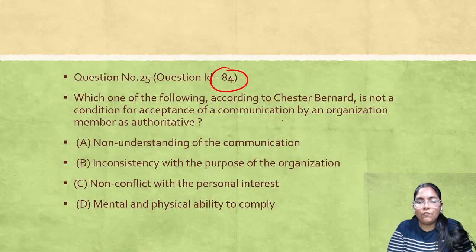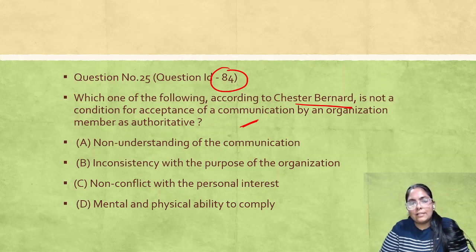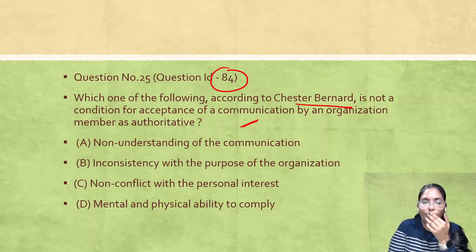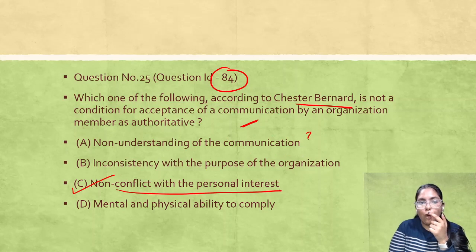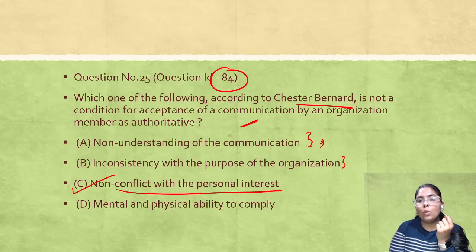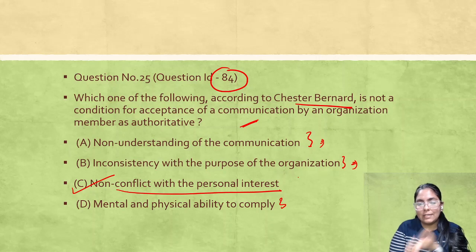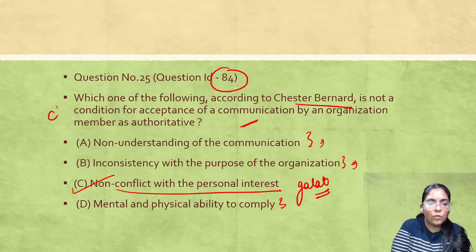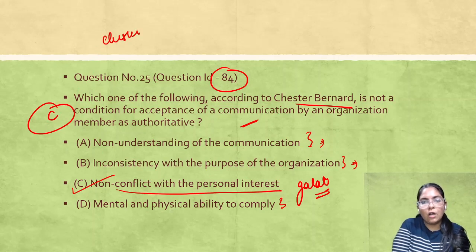Question ID 84: Which of the following, according to Chester Barnard, is NOT a condition for acceptance of an order? If you don't understand the communication, you won't accept the order. If it seems against the organization's goals, you won't accept it. If you can't accept it mentally or physically, you won't. But if it conflicts with your personal interest — this plays the wrong role in making an organizational order authoritative. The correct answer is option C. This is a public administration topic: Chester Barnard's communication process.